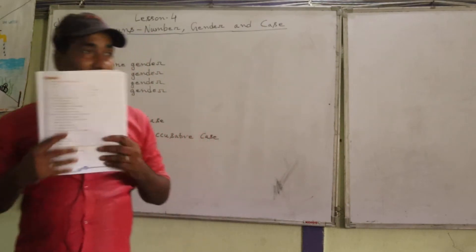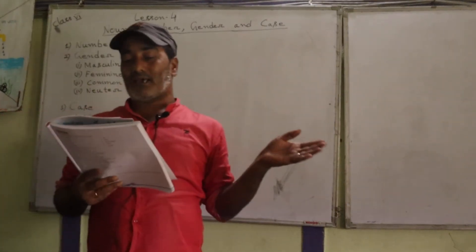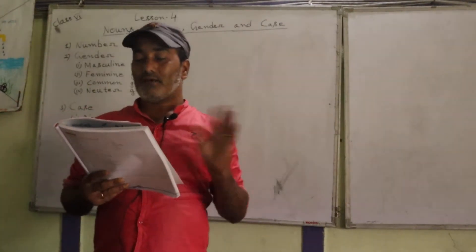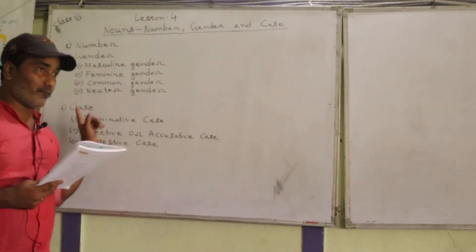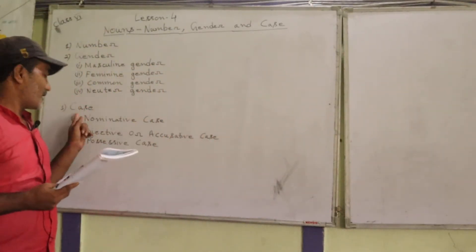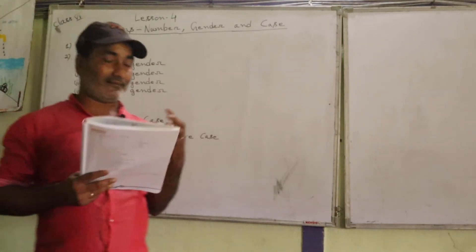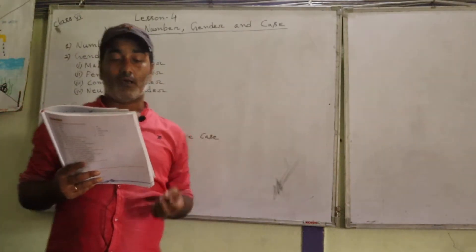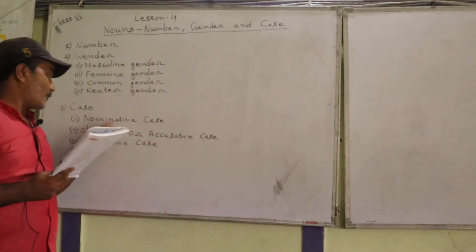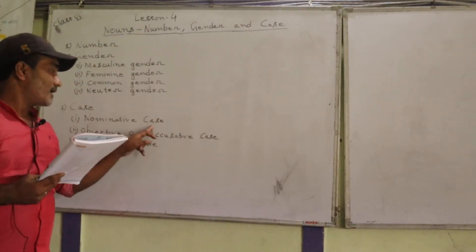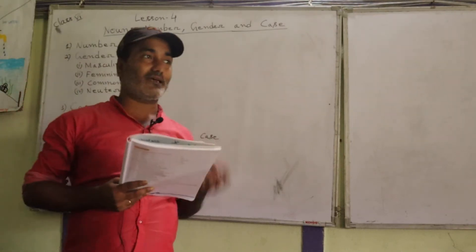In grammar, if you look at case, there are different types of cases — there are many cases in grammar. Let's see what are the different kinds of cases. The first one is called nominative case. Let's see what nominative case is.